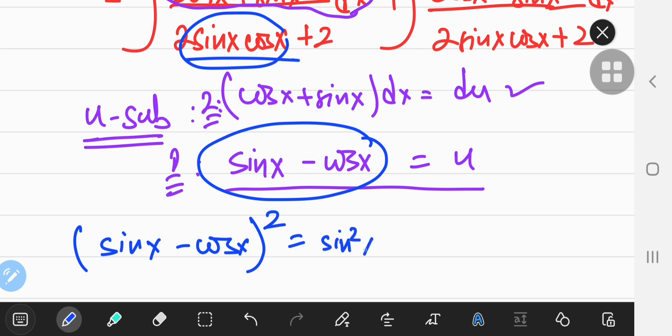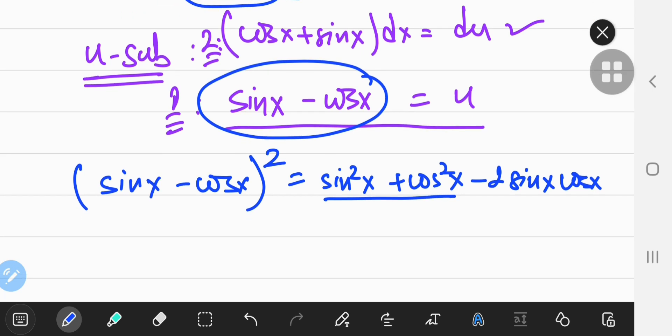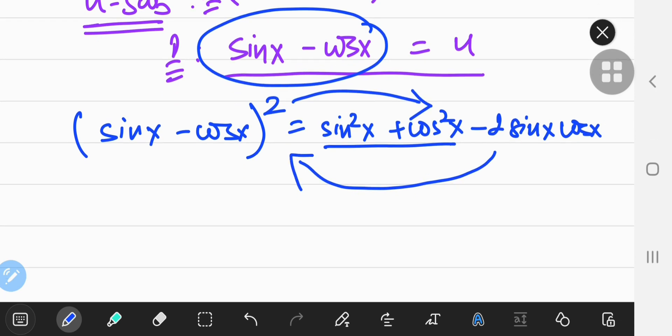So that's going to be sine square x plus cos square x minus 2 sine x cos x. And sine square and cos square, they always add up to 1, right? So if I take this term and shift it over here, and I take the other term and shift it to the right, I'm going to get 2 times sine x cos x equal to 1 minus u squared.